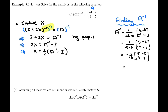That gives us negative 1 over 13 times the matrix [5, -2; -4, -1]. Completing the multiplication, we get the matrix A inverse: negative 5 over 13, 2 over 13, 4 over 13, and 1 over 13.